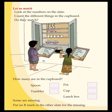Our Manu and Minu are here. They have slides in their hands. First, look at the numbers on Minu's slides, then count the different things in the cupboard, and try to compare them — do they match? The numbers on Minu's slides are: 5 spoons, 5 tumblers, 1 pot, 3 cups, and 2 lunch boxes.